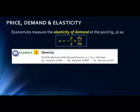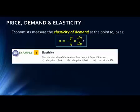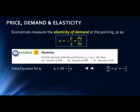We have a demand function: p plus 5q equals 100, where p is price and q is quantity. We're asked to find the elasticity when the price is 40, 60, and 50. First, let's find the derivative of q with respect to p. If we solve for q, we get q equals 20 minus one-fifth p. Taking the derivative with respect to p, we get dq/dp equals negative one-fifth. That's very straightforward.